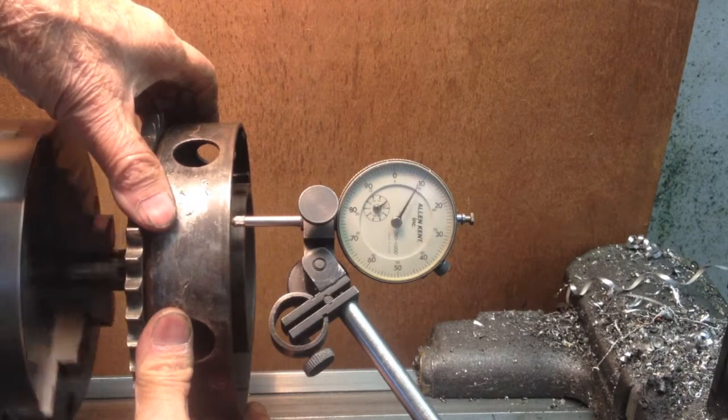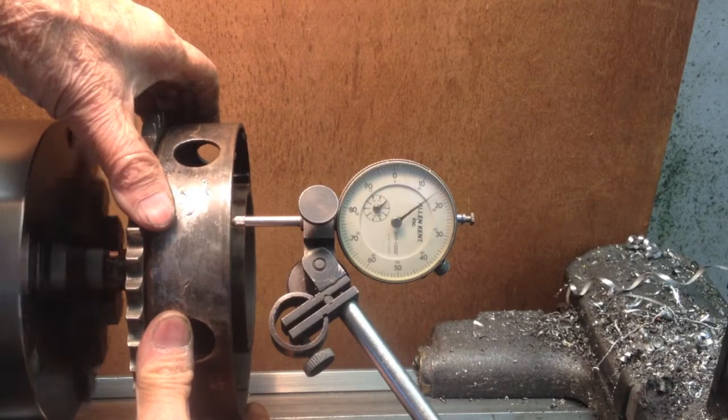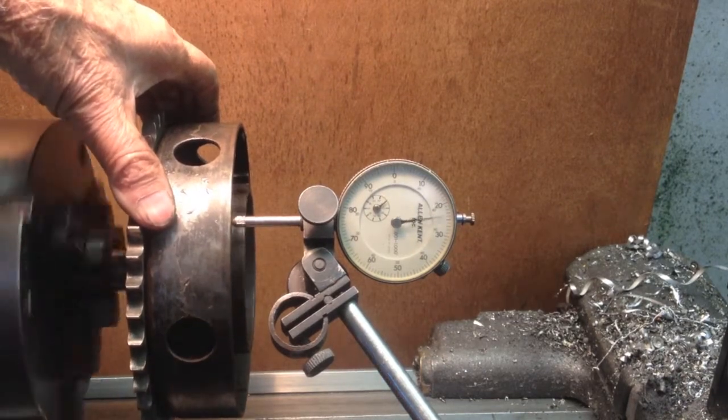So now we're seeing on the main shaft and on the clutch basket, about 10, 12, 15 thousandths of an inch run out.